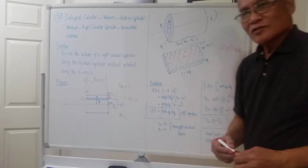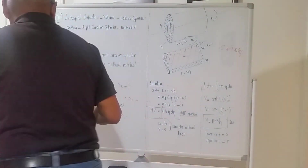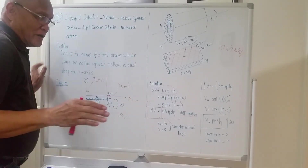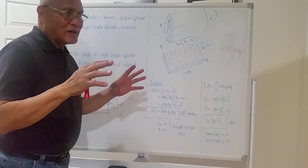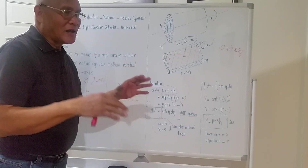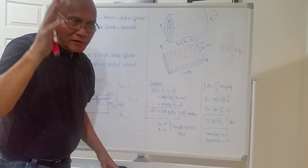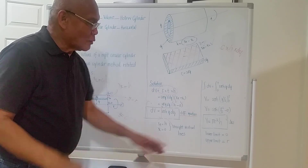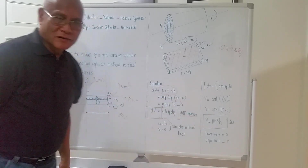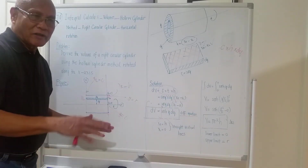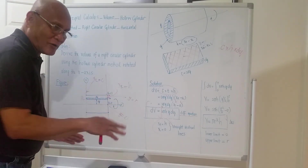What is the significance of tonight's topic? The significance is that whether you rotate the cylindrical area along the y-axis or the x-axis, the resulting formula will still be the same: V = πr²h.